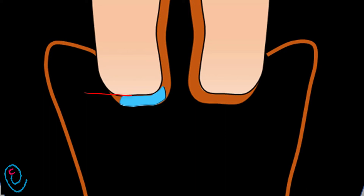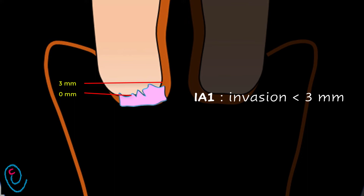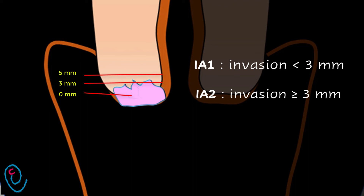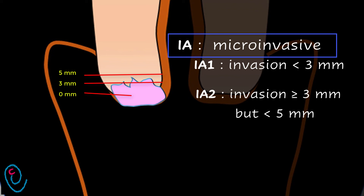On the other hand, malignant disease invades the basement membrane. When the depth of invasion is less than 3 mm, it is stage 1a1. When the depth of invasion increases to 3 mm or more but less than 5 mm, it becomes stage 1a2. Stage 1a1 is microinvasive — it can be diagnosed only by microscope.